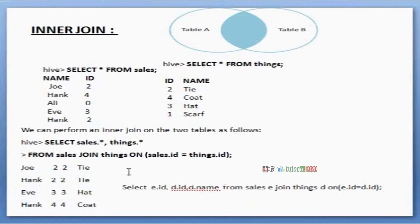See this query: select e.id, d.id, d.name from sales join things. Here E and D are the alias names of the particular tables. Same query, but E and D substitute for sales and things. That we call the inner join.